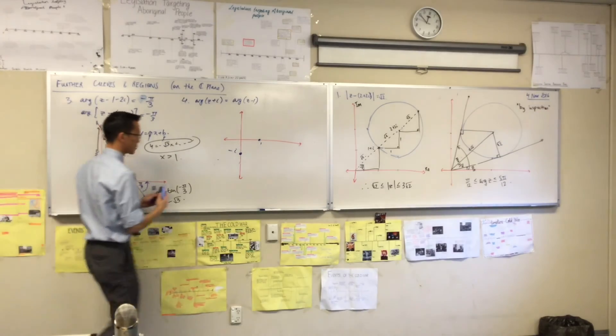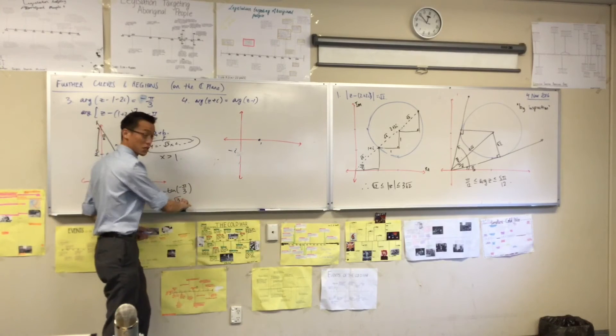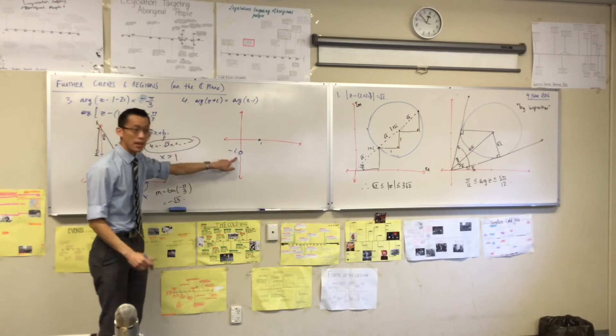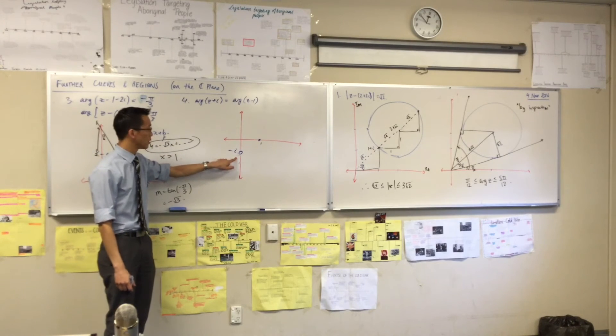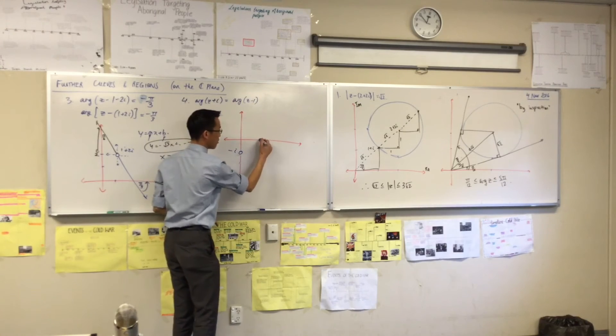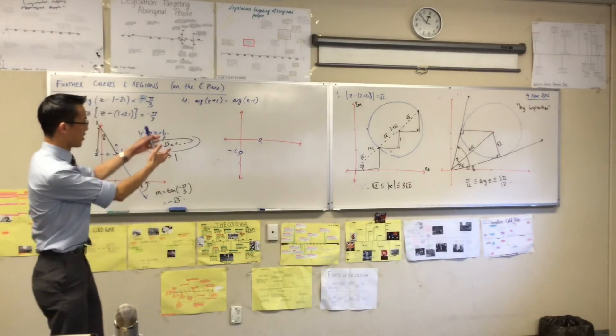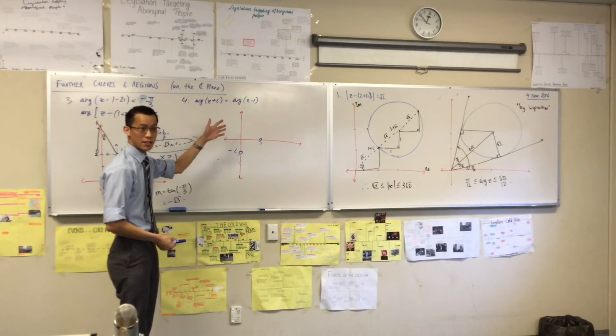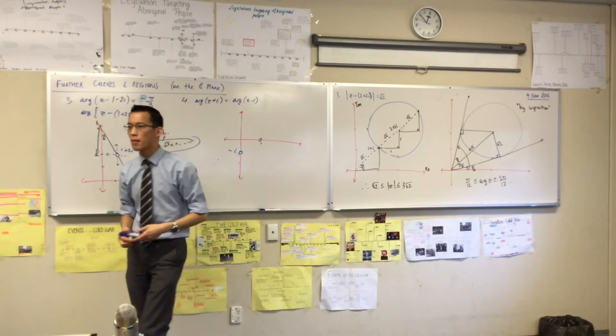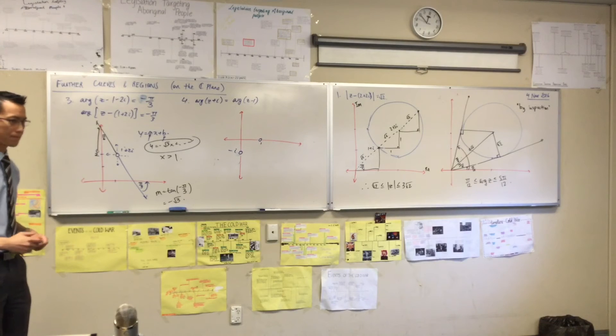So think about this. There are some zeds. There's a whole lot of zeds somewhere. Such that if you measure the argument from here, it should be the same argument as if you measured it from here. Where could you... If you were like standing... Like this is like the basketball court. Where should I stand? Such that if these two guys looked at me, they'd both come up with the same argument.